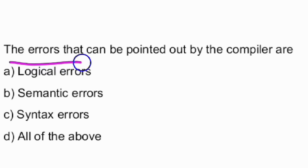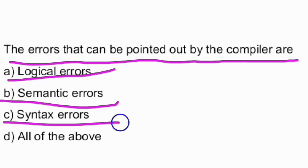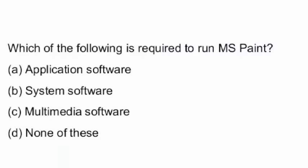Next question: the errors that can be pointed out by the compiler are — logical errors, semantic errors, syntax errors, or all of the above? The answer is syntax errors — option C is the right answer.